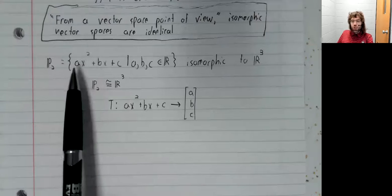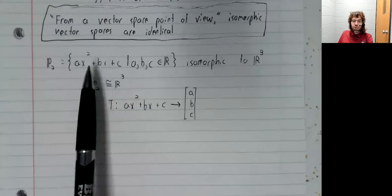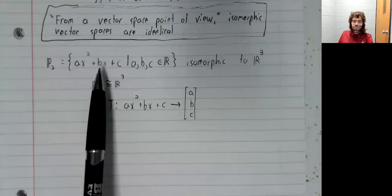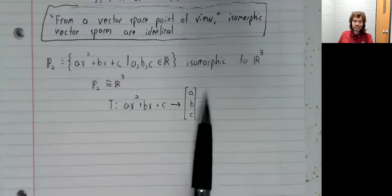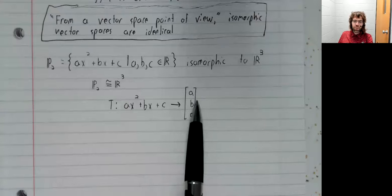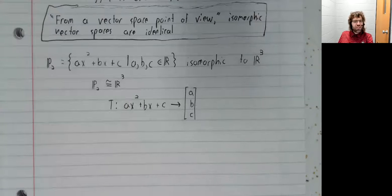Or we could multiply two polynomials together. That's something that you can do here that you can't do here. But again, that's taking us outside of the setting of vector spaces.